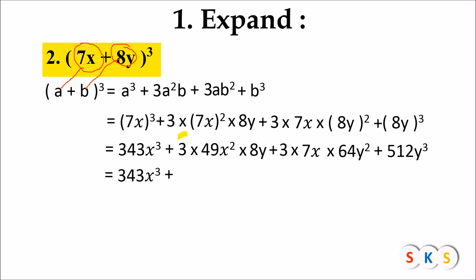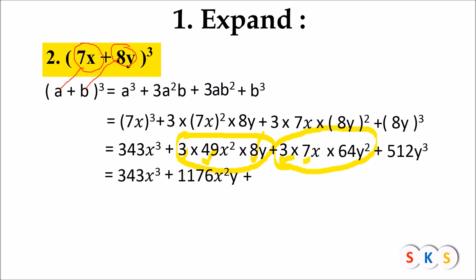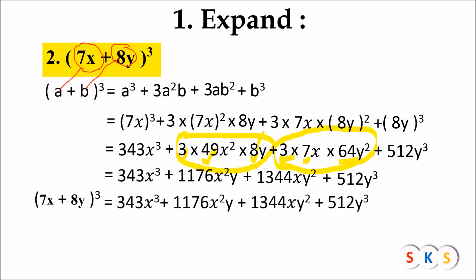Continuing the simplification: 3 × 49 × 8 = 1176, giving 1176x²y. For the next term, 3 × 7 × 64 = 1344, giving 1344xy². So (7x + 8y)³ = 343x³ + 1176x²y + 1344xy² + 512y³.